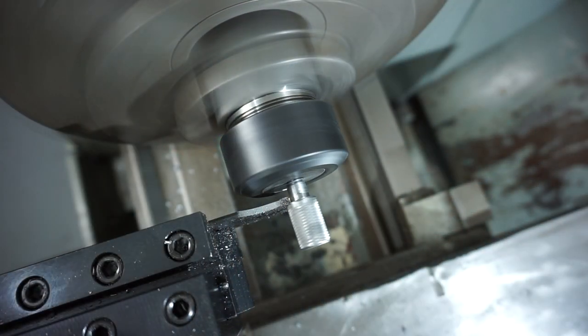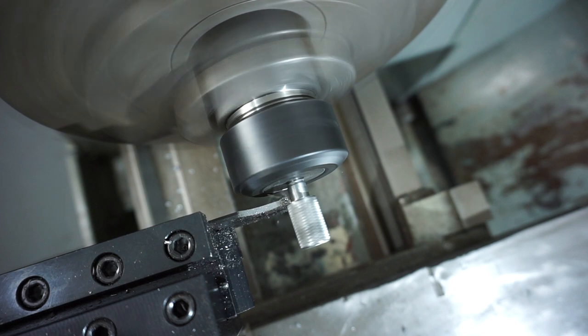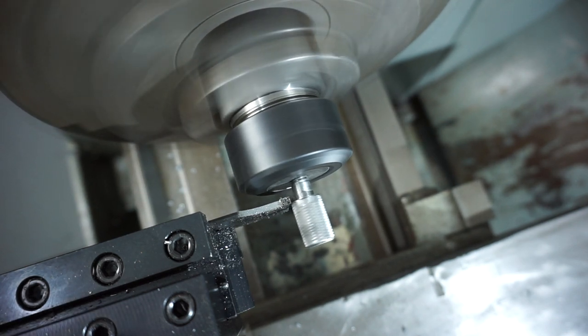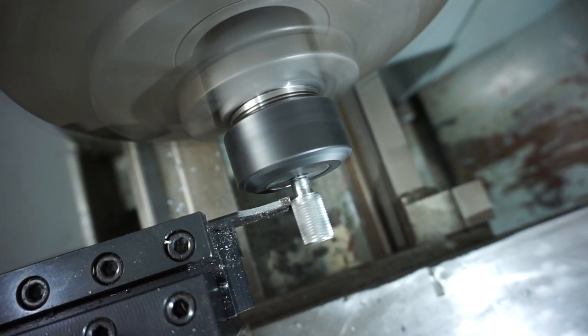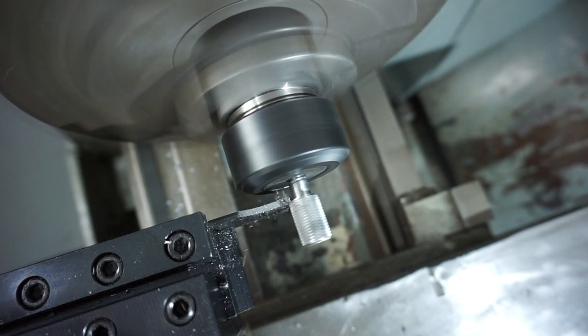I'm just using my collet block holder here and just squaring off that shoulder. So I just needed to square the shoulder off so it sat flush down on top of the bar.